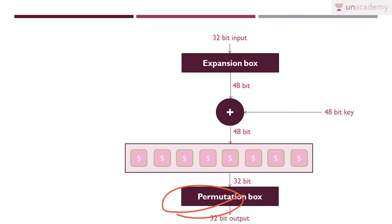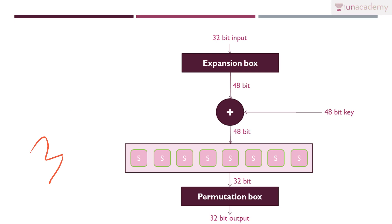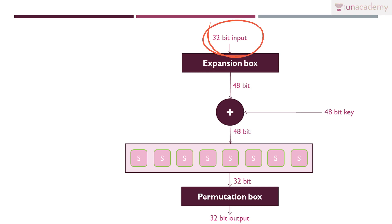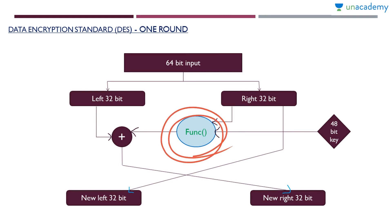Now after passing through these S-boxes, the 48 bit becomes 32 bit at the output. Now again this 32 bit is given to a permutation box. These 32 bits will change their positions and the permuted data will be the 32 bit output. That is what is happening inside the function — 32 bit input and 48 bit key as input, and 32 bit as output.